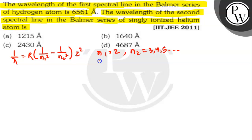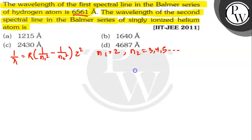Now, given in the question, the wavelength of the hydrogen atom is 6561 Angstrom. So lambda is 6561 Angstrom, n1 is 2 for Balmer series, n2 is 3 for the first line, and z is equal to 1.